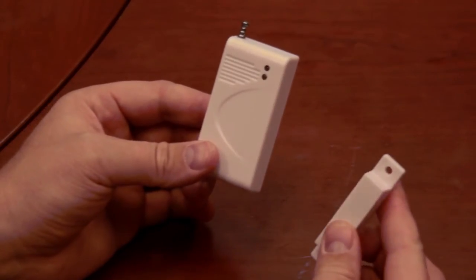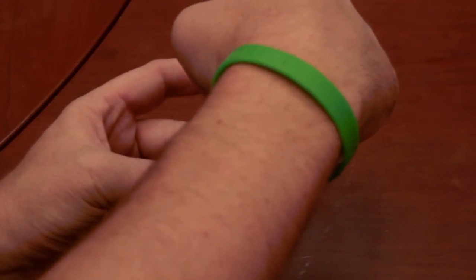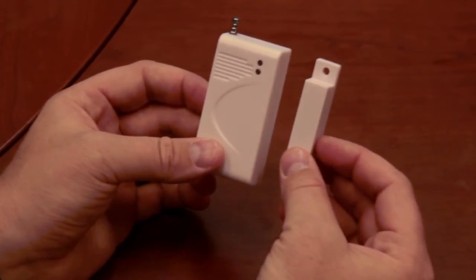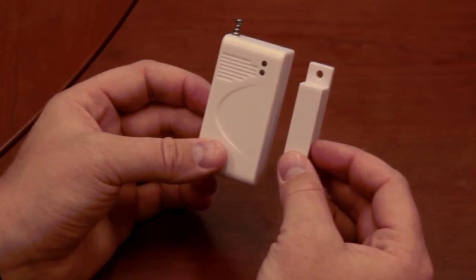So again, do not put the magnet on the antenna side perpendicular to the unit. It has to be parallel and on the side with the two LED lights.